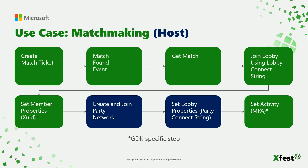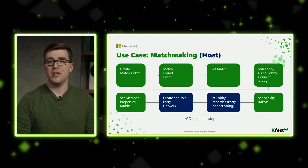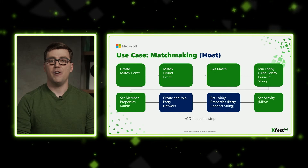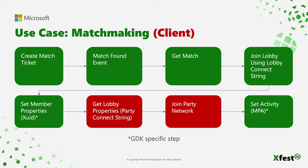The high-level flows for matchmaking will look very familiar to anyone who has used Smart Match and MPSD. Create a matchmaking ticket and wait for the match found event, then get the actual match and pull the lobby's connection string from it to join the lobby. It's important to remember that you cannot use the normal join lobby function to join the found match — you must use the join arranged lobby function instead. Set your zooid as a member property just as you would when joining a lobby. The host will need to spin up a party network and write its connection string to the lobby properties, then set an activity using MPA. More complicated scenarios are also supported, including adding remote users to a match ticket.